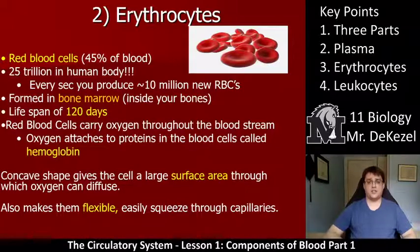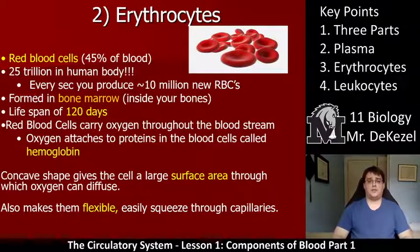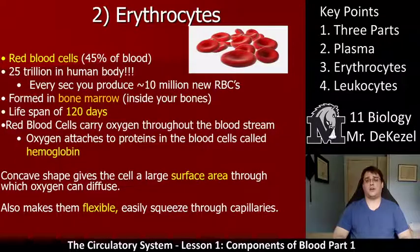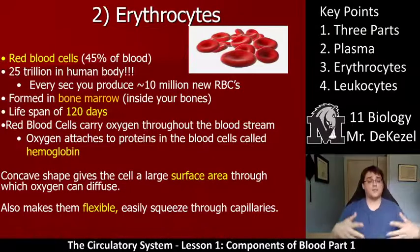Red blood cells carry oxygen throughout the bloodstream. Their job is to move oxygen from the lungs to the other parts of your body, pumped by your heart. This oxygen attaches to proteins in the blood cell called hemoglobin. They are concave in shape — essentially indented discs on both sides — which gives them a large surface area so they can transport more oxygen.